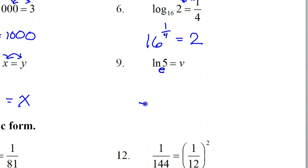So, starting with the base. I will start with my e. And when you change forms, these two will sort of switch places. E to the v power equals 5.